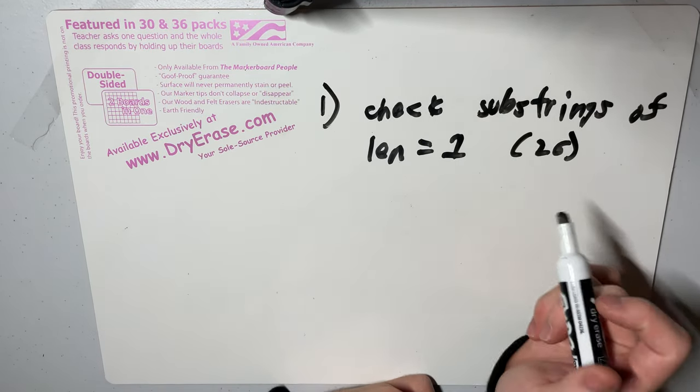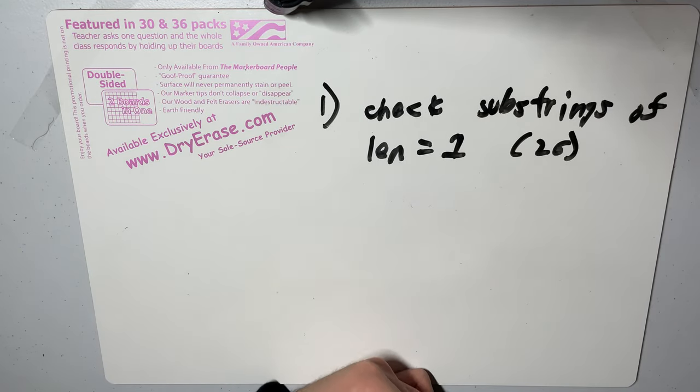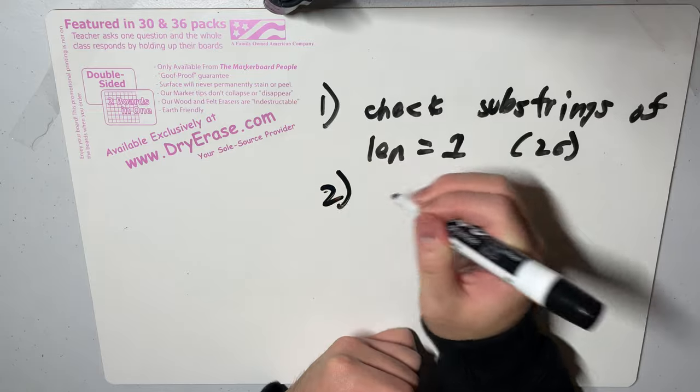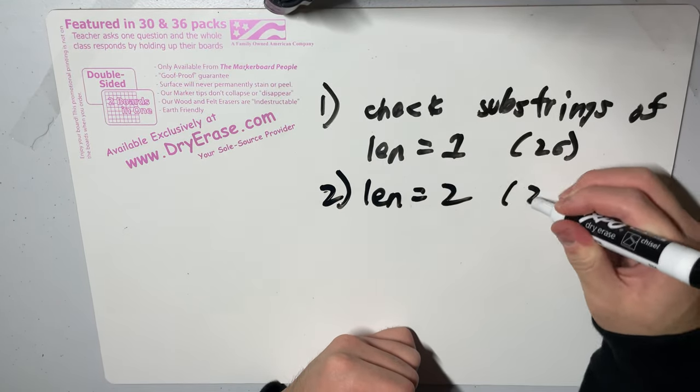Otherwise, if all of these strings of length one appear as a substring in our input, then we repeat the step for all substrings of length equals two, and there's 26 squared of them.